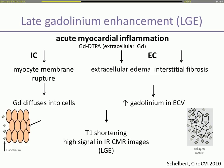With inflammation, there is a higher tissue content of gadolinium and a slower washout of gadolinium out of the tissues. This is due to, in the acute phase, a higher intracellular gadolinium content because of myocyte membrane rupture allowing gadolinium to diffuse into the cells. Also in the acute phase, there is more gadolinium in the extracellular space due to edema. At a later stage, you will find interstitial fibrosis with more gadolinium retained in the interstitium.